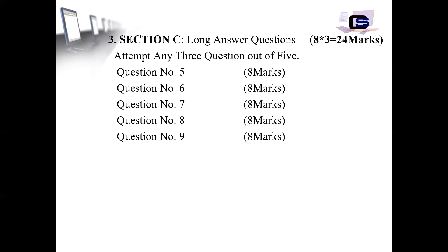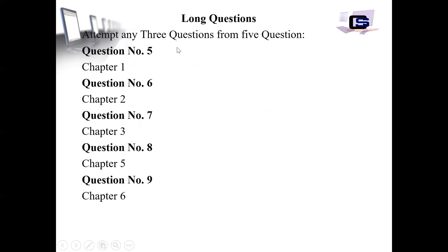In Section C, we have long answer questions. In total there are 5 long answer questions, and we will have 3 attempts — meaning you attempt any 3 questions out of 5. Each question carries 8 marks, so 8 multiplied by 3 equals 24 marks. Section A is 15, Section B is 36, and Section C is 24 marks.